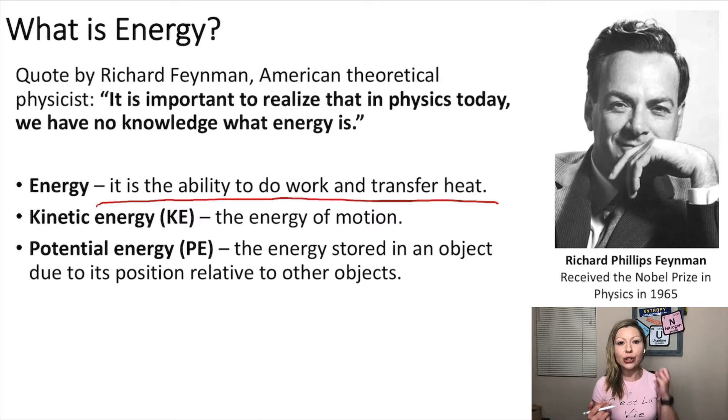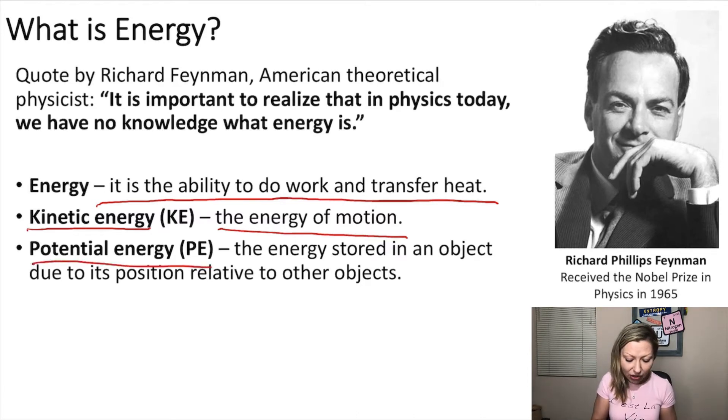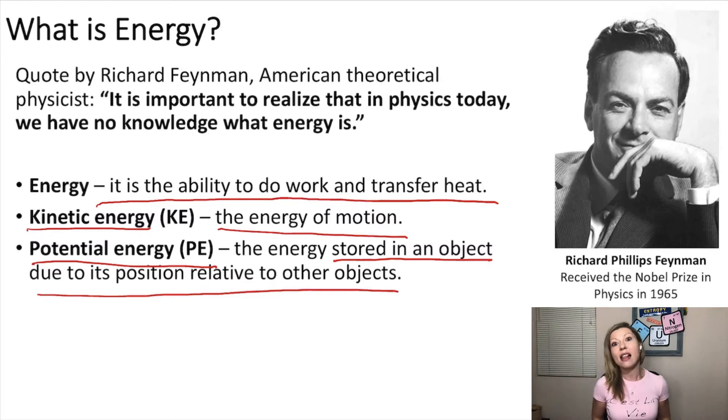So there are two basic forms of energy. Kinetic energy, which is just simply the energy of motion - so how fast something is going. And potential energy, which is the energy stored in an object due to its position relative to other objects.